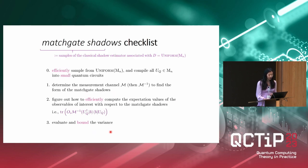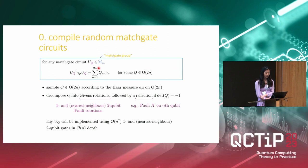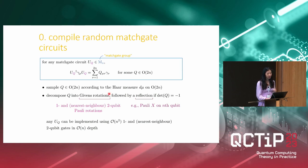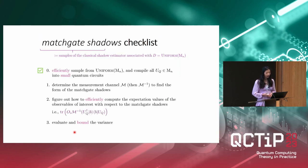Now we can go through our checklist for D taken to be the uniform distribution of matchgate circuits. The first thing to check is that we can efficiently implement this distribution, which is quite standard. The bottom line is that we can efficiently sample a uniformly random matchgate circuit and compile it into a circuit consisting of at most N-squared one- and two-qubit Pauli rotations, and these can be parallelized to linear depth.